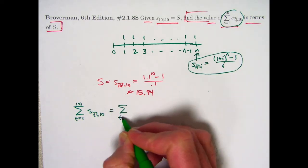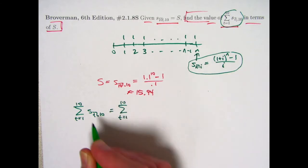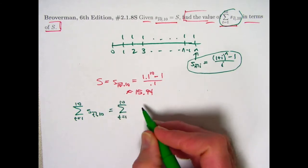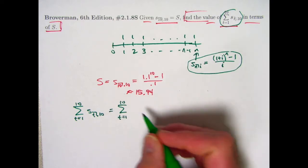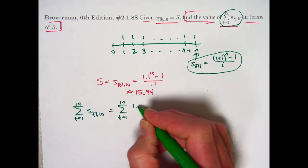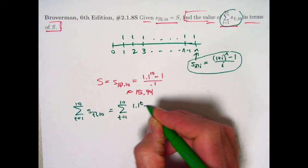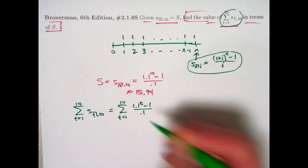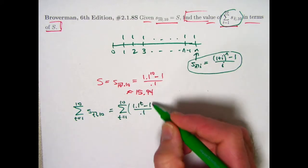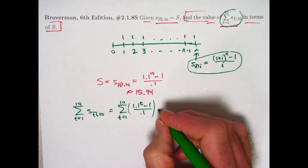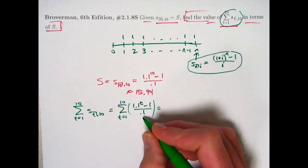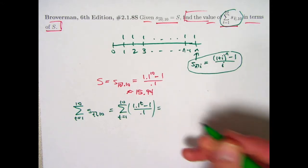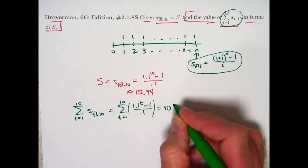I'll go ahead and plug in the formula for this future value. So n is going to be replaced by t, and i gets replaced by 0.1. So I get (1.1^t - 1) / 0.1. That is what I'm adding. Perhaps the simplest thing to do here is to see that since you're dividing by 0.1, that's the same as multiplying by 10, which is a constant. So I can bring it out in front of the summation.